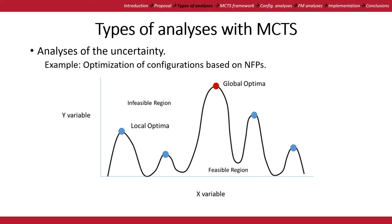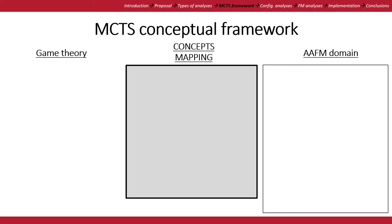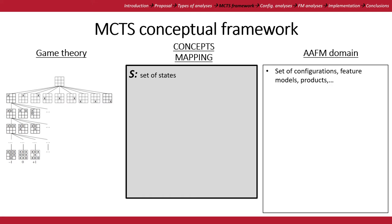To realize these analyses, we propose a Monte Carlo Tree Search conceptual framework, extracted from the game theory domain and mapping concepts to the software product line domain, to enable the analysis of feature models. A problem can be formalized with the following concepts. A set of states: while in game theory a state represents a board position, in software product lines a state can represent a configuration of a feature model, a product, or a feature model itself. We also have an initial state representing how the problem is set up at the start — it can be an empty configuration or an empty feature model.